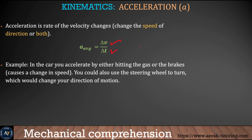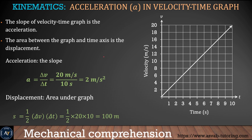In this figure we'll find acceleration from a velocity-time graph. Say an object is moving and at 20 meters per second it takes 10 seconds to ramp up, so the acceleration will be 20 divided by 10, which is 2 meters per second squared. The displacement will be the area under the curve — you can see this area under the curve represents the displacement.